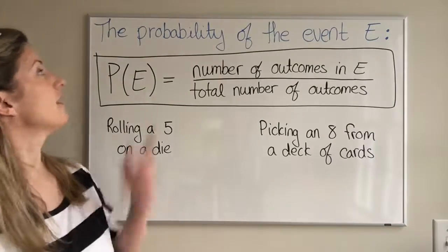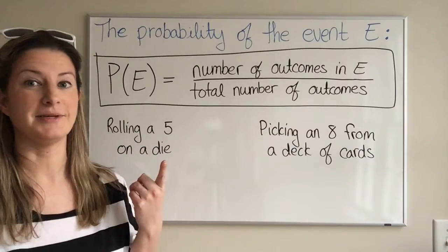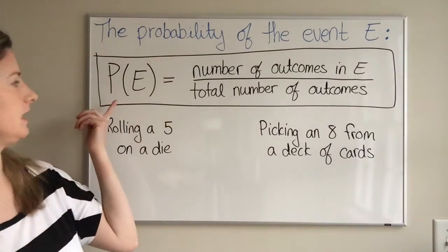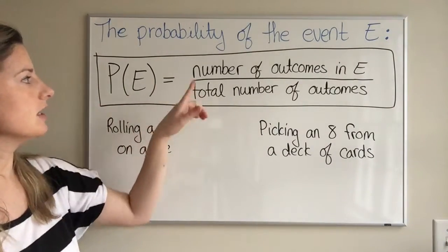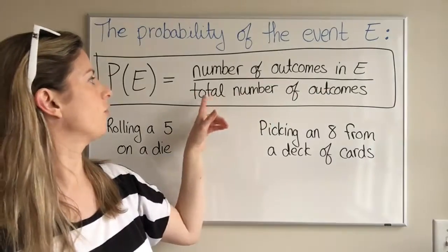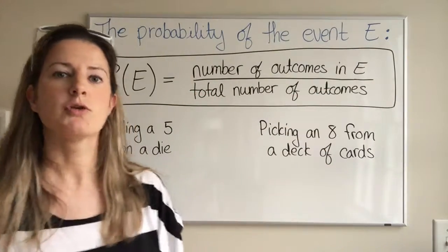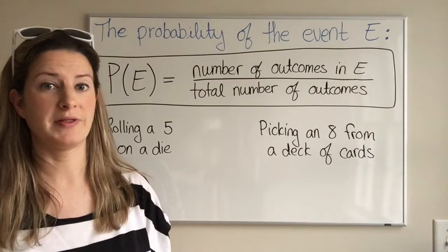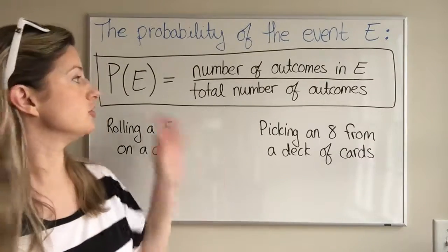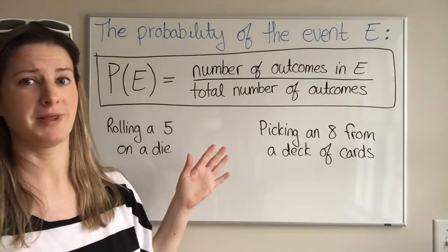Here's the formula for the probability of the event E. The probability of event E, written as P(E), equals the number of outcomes in E over the total number of outcomes. Probability questions show up on the ACT frequently, so you definitely want to remember this formula.